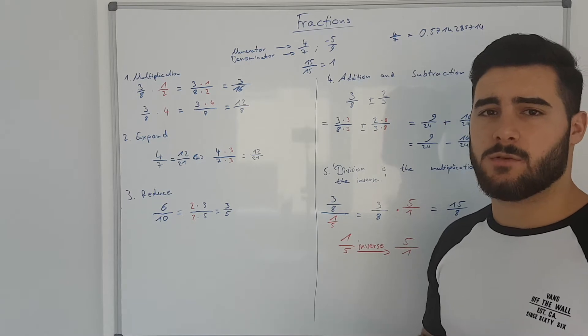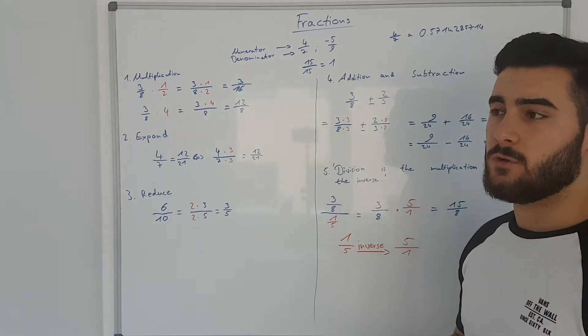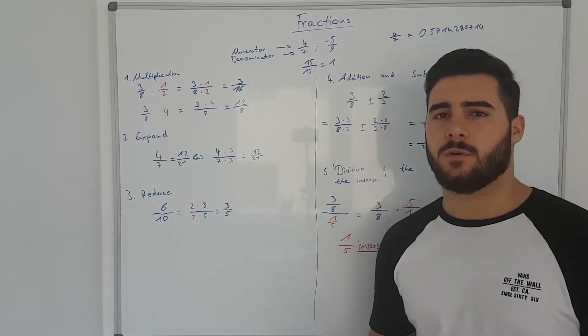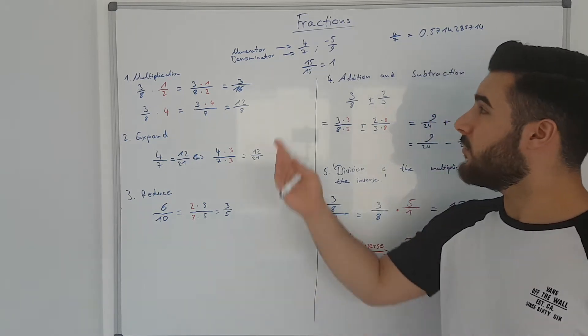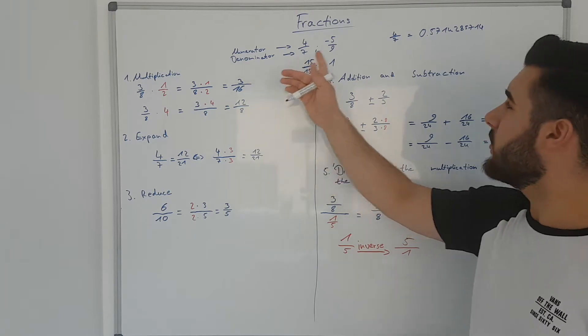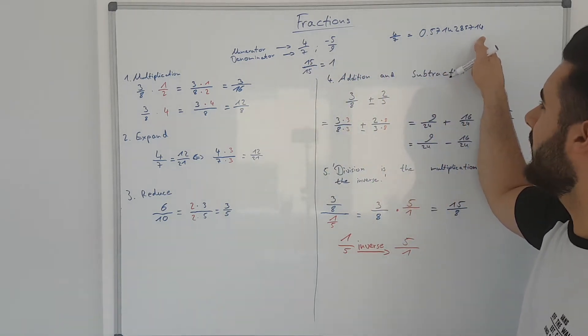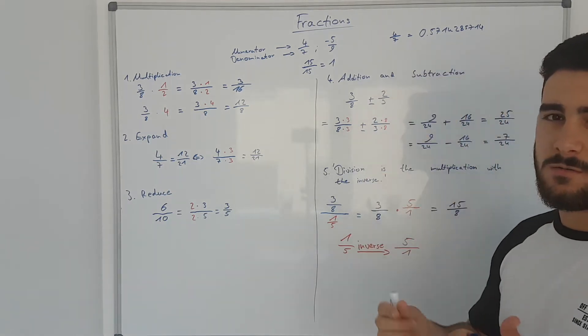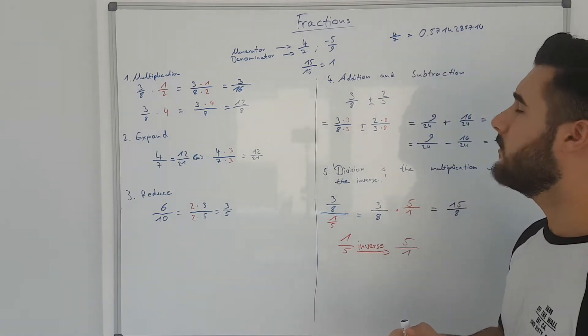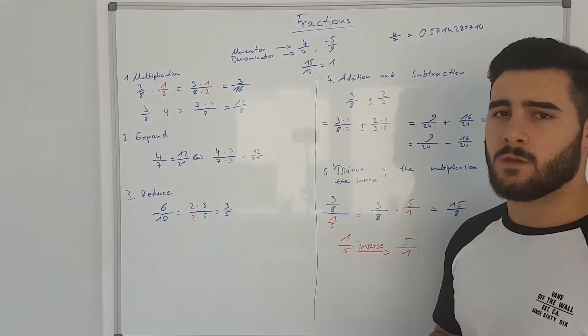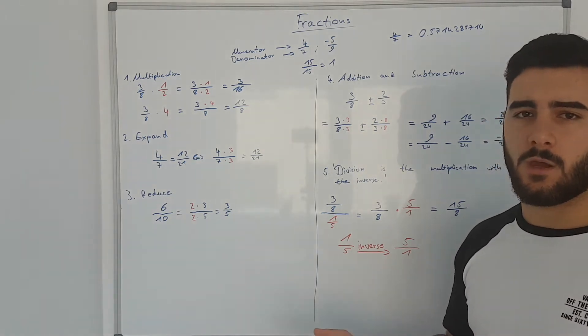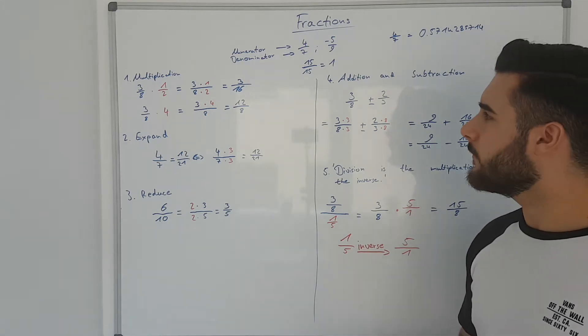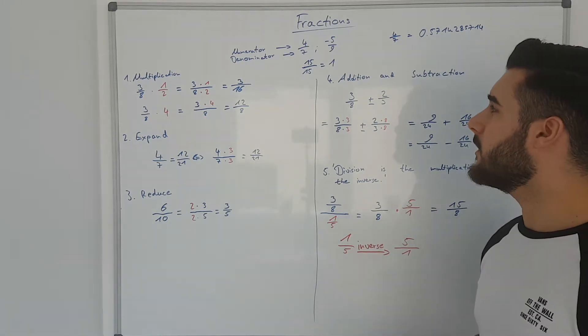Another thing, why do we use fractions? We use fractions basically because you cannot show every number in decimals. For example 4 over 7, this is what it would look like as a decimal. So how would you want to calculate with that or how long would it take to type that into your calculator? It's just unnecessary work. So therefore we use fractions for calculations.